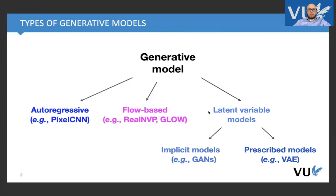So a quick recap from the last lecture. We divide generative models into autoregressive models like PixelCNN, flow-based models like RealNVP or Glow, and latent variable models when we have additional latent lower dimensional representation. And here we distinguish implicit models and prescribed models.